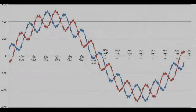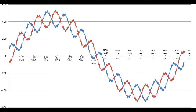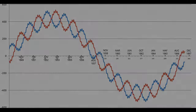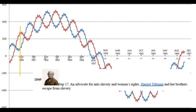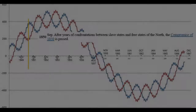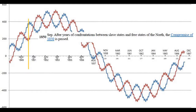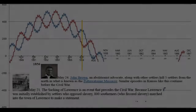We're going to look at the 19-year wave and its effect on history through the American Civil War. Starting with pre-war events: on September 17th, 1849, anti-slavery and women's rights advocate Harriet Tubman and her brothers escape from slavery. This is before the Civil War and as you can see on the wave, it's above the zero point going up. Then in September 1850, after years of confrontations between slave states and free states of the north, the Compromise of 1850 is passed.